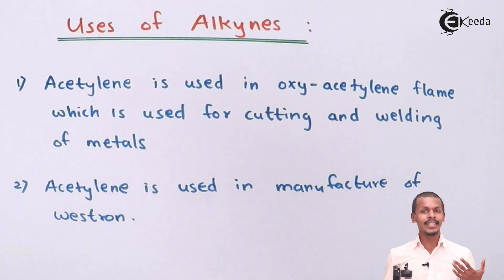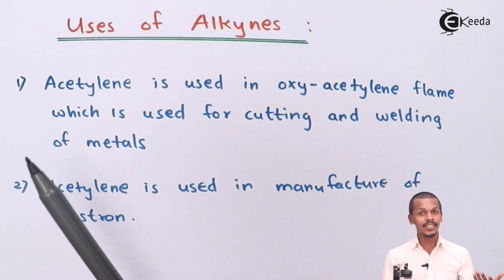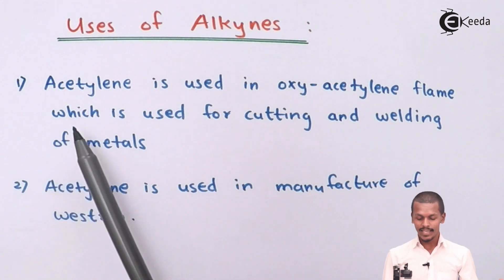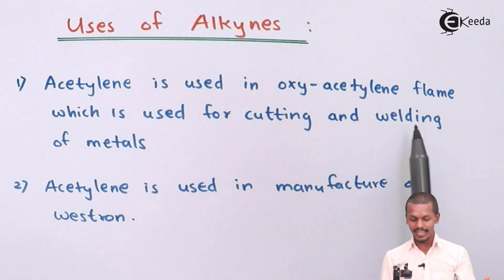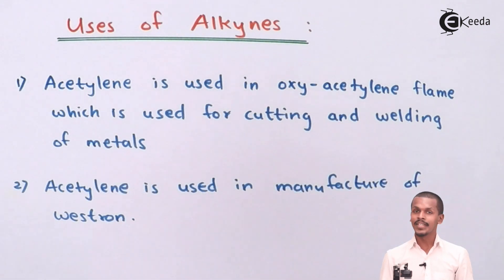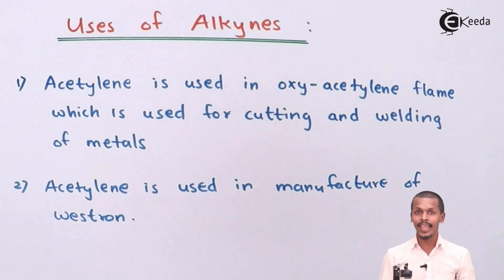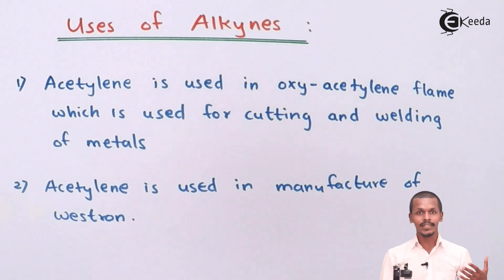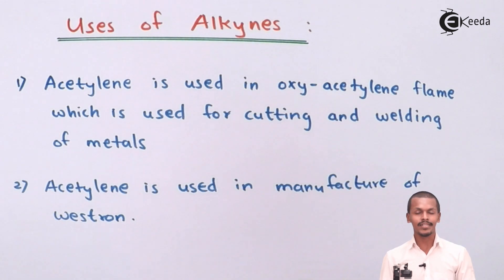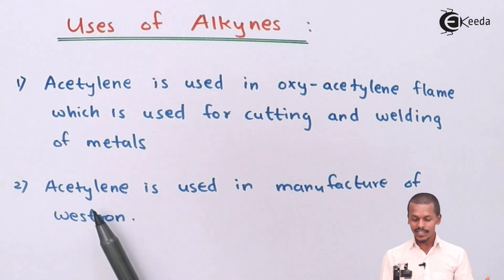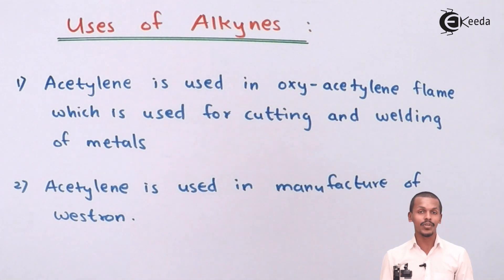Talking about the uses of alkynes, the first member of the alkyne series, that is acetylene — also basically known as ethyne — is used in the oxy-acetylene flame, which is used for cutting and welding of metals. Acetylene is also used in the manufacturing of Vestron.